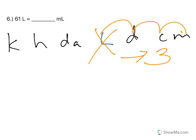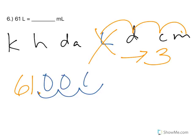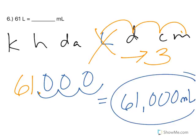So one, two, three to the right. So 61 liters, one, two, three decimals to the right with three zeros in those humps, and I end up with 61,000 milliliters.